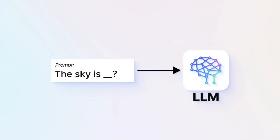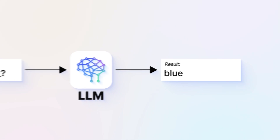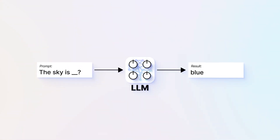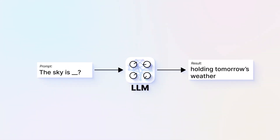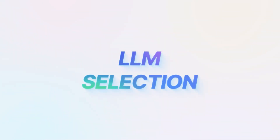Large language models have a pretty simple workflow where you input a prompt of some sort and the LLM does its magic and spits out an answer. But there are many little knobs you can adjust to change the output portion of that process. Before we talk about those knobs, let's talk about large language model selection. Here are some terms that you might want to know when you're choosing a model.